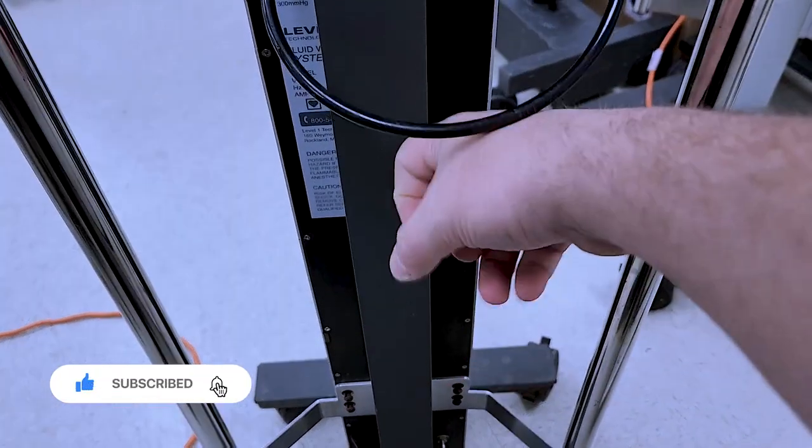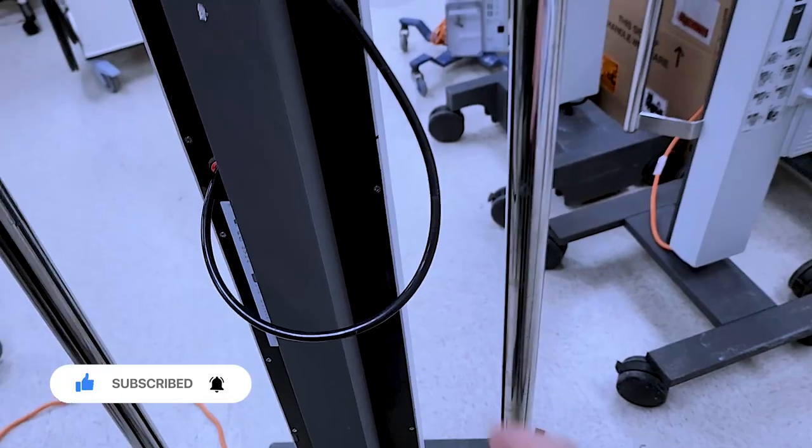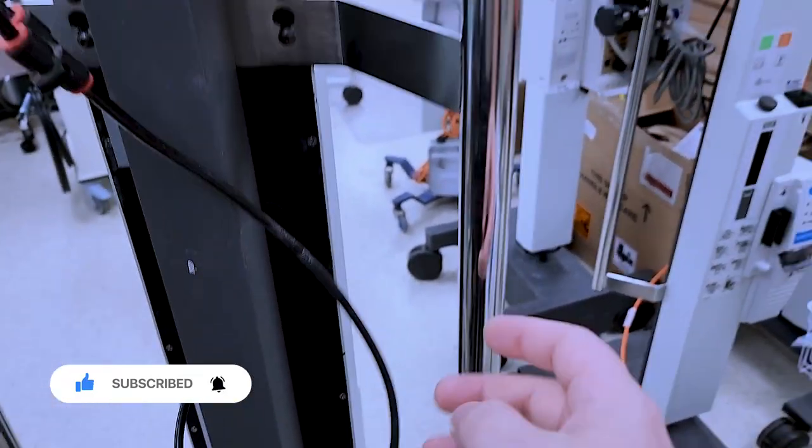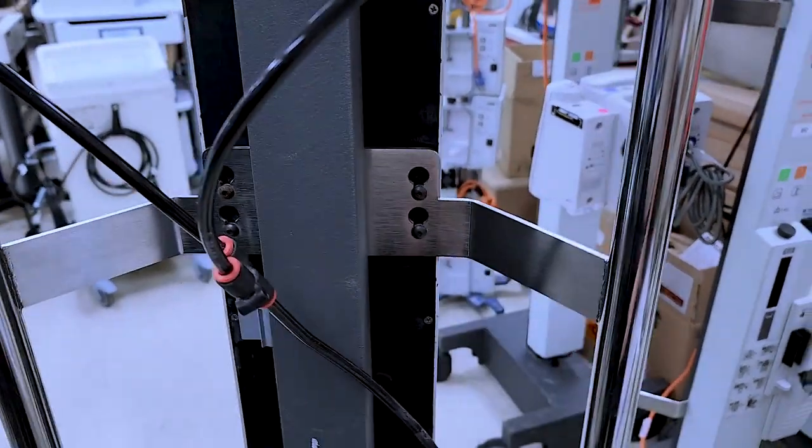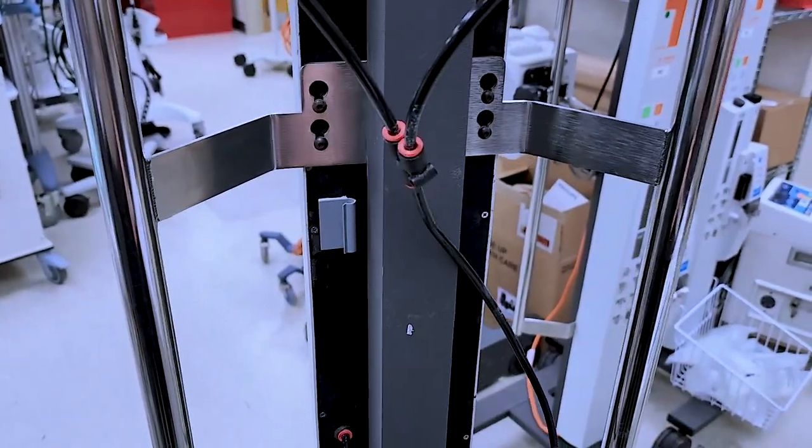And this is mounted to the pole. The base unit that we're taking off is mounted to this. Kind of simple. Alright, so let's go ahead and do it.